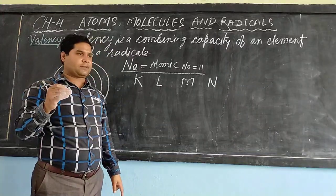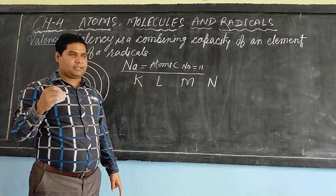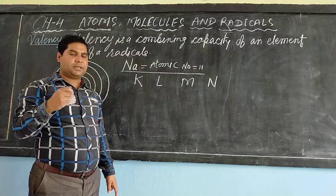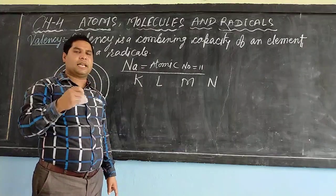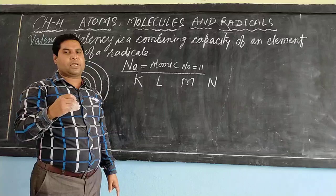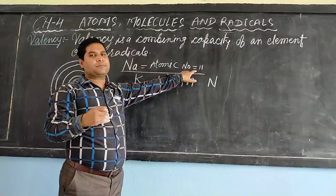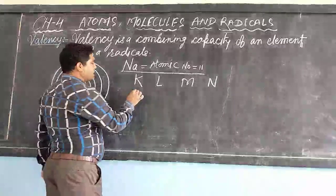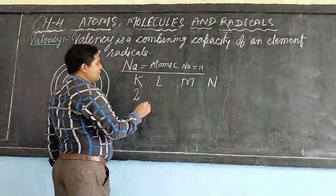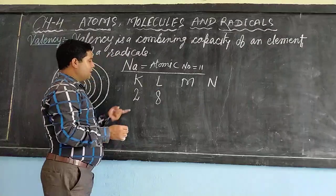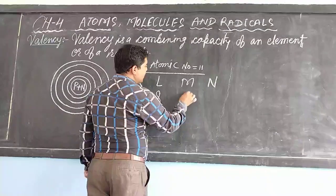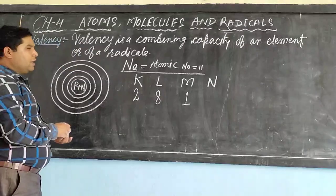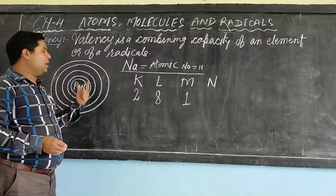Electronic configuration can be defined as the distribution of electrons of a particular element according to the capacity of the shells. So atomic number is 11. We will divide according to the capacity of the shell. In the K shell the capacity is 2, L shell 8, and only one electron is left which is placed in the M shell.